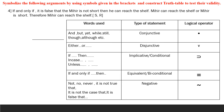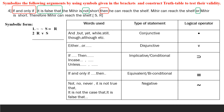Let us see how to symbolize the first premise. It is if and only if. 'It is false that Mir is not short' gives us a double negation: curl curl S, then triple bar R. The second premise, Mir can reach the shelf or Mir is short, will be R wedge S. And the conclusion, Mir can reach the shelf, is therefore R.